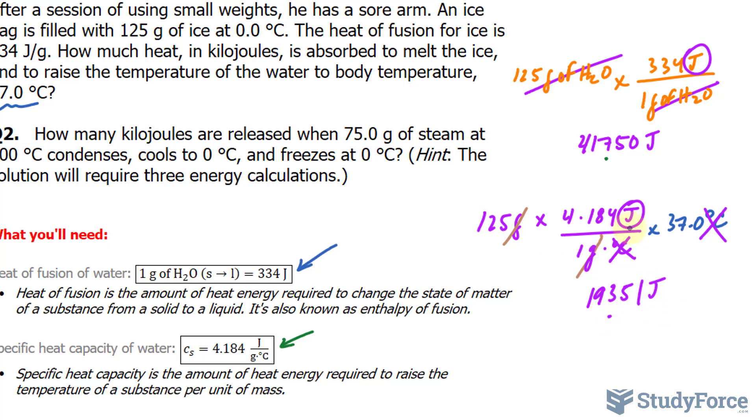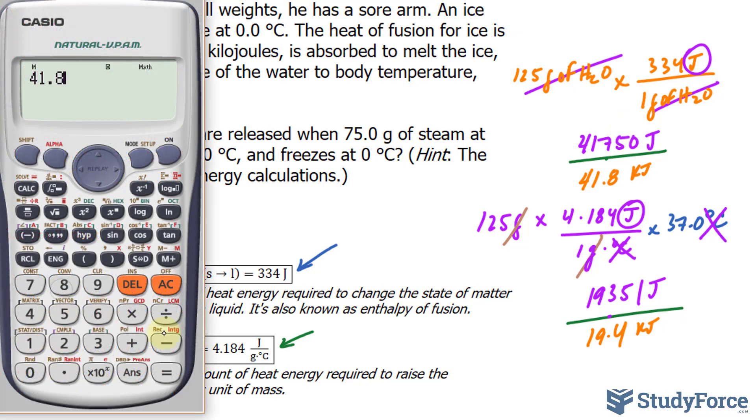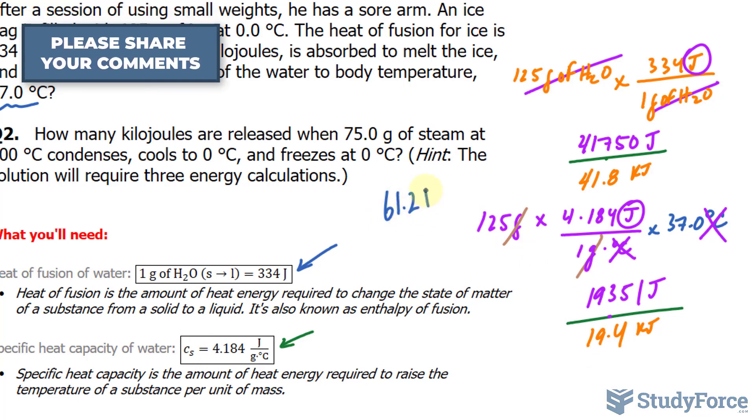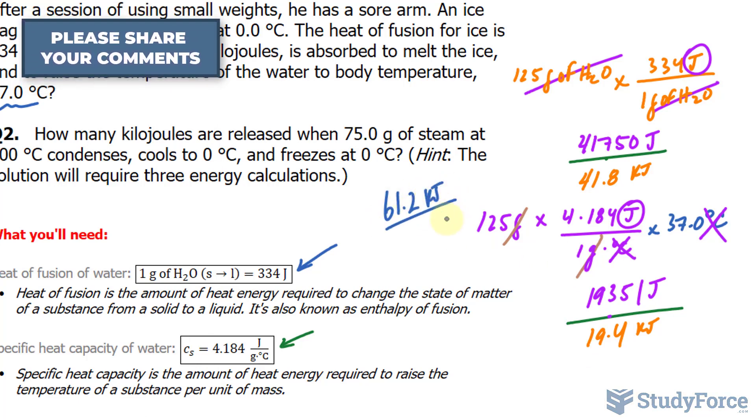So this is the amount of energy needed to raise to 37.0. And this is the amount of energy needed to overcome going from solid to liquid. And so we will now add this number and this number. And remember the amount of significant figures. So this was 41.8. I'm rounding now. And this is 19.4. And both of these are in kilojoules. Just assume that we divided both of them by 1,000. And that's how you go from joules to kilojoules. 41.8 plus 19.4 gives us 61.2. 61.2 kilojoules of energy is required for all of this to happen.